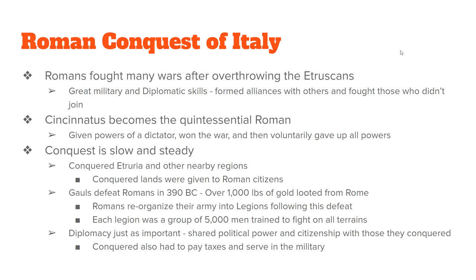Once the Romans overthrew the Etruscans, the Romans went on the offense. Before long, Romans were conquering and taking over lands surrounding the city of Rome. This wasn't always done with military force — many times they would negotiate and form alliances, only fighting if they couldn't make an agreement. In reality, a lot of the Latins around them joined voluntarily.